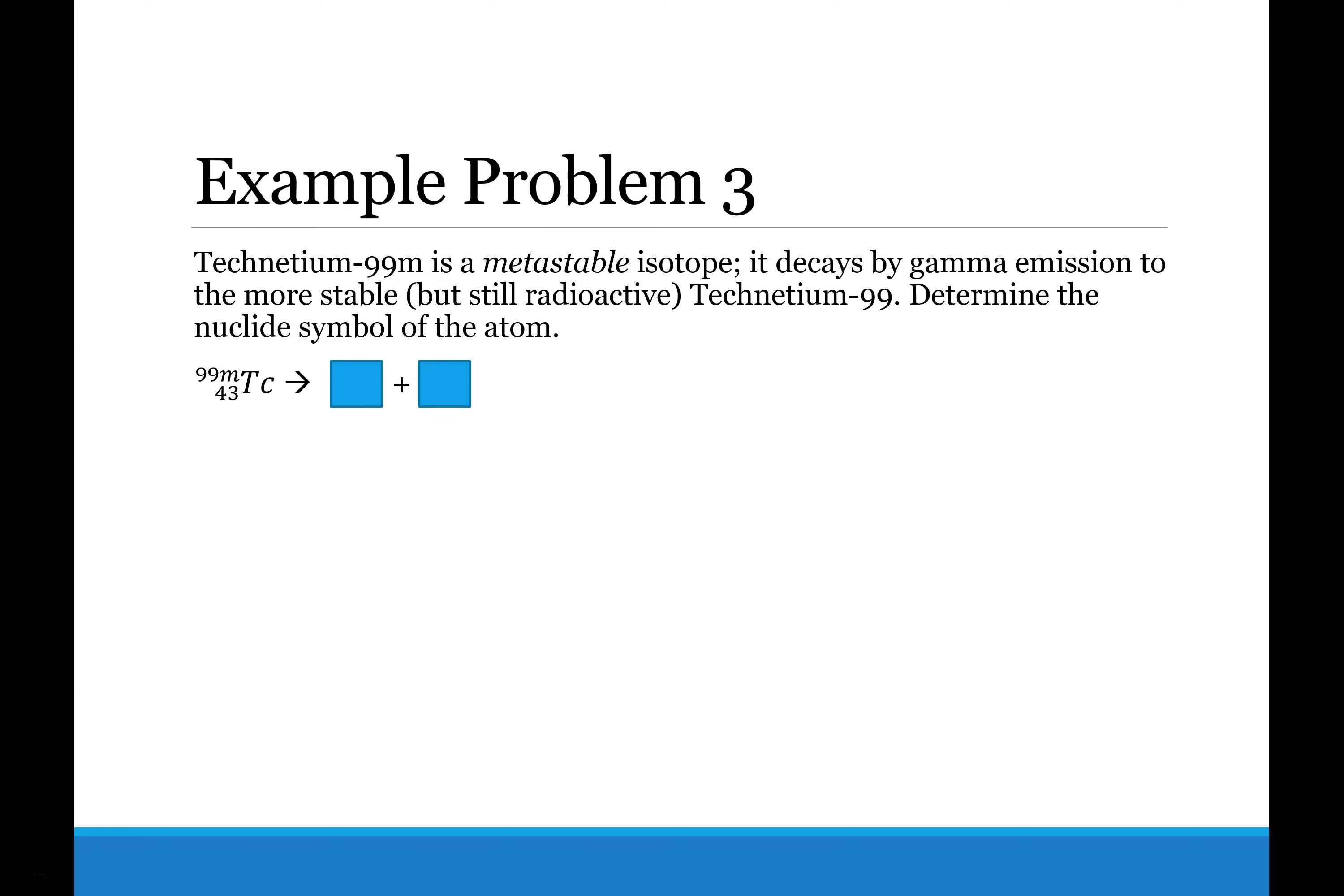Example problem 3 asks us to work the gamma decay for technetium-99 metastable. Gamma decay is the easiest of all to do because it is not an atomic process. Nothing happens in the nucleus of the atom.